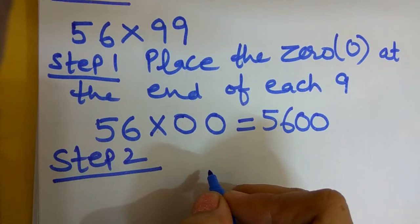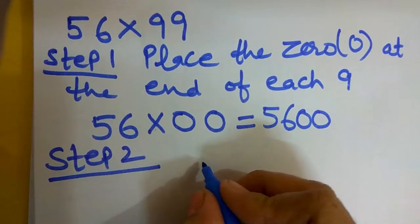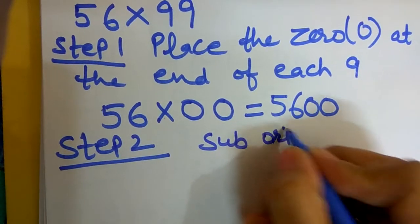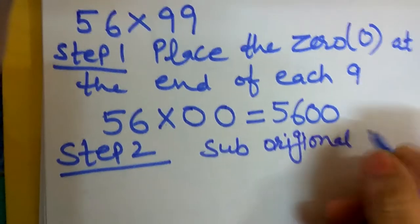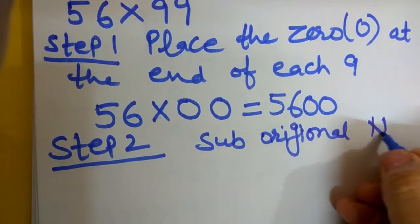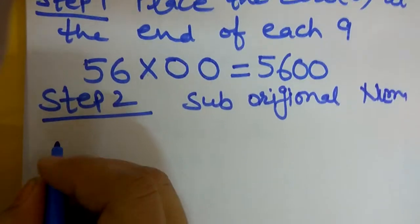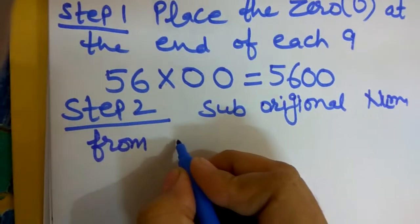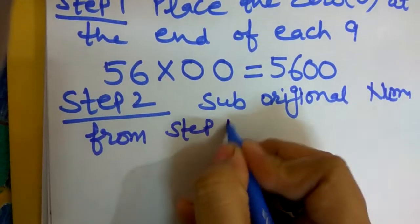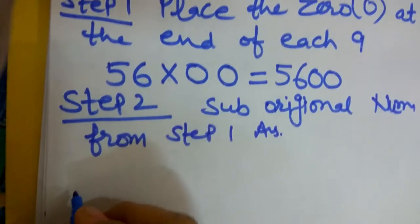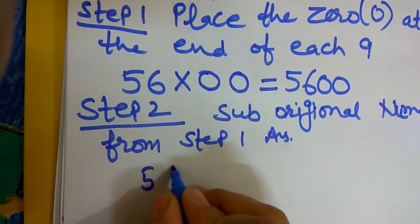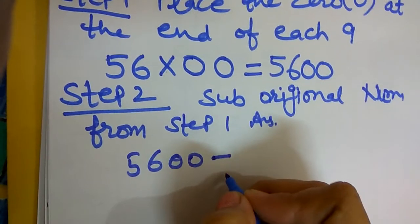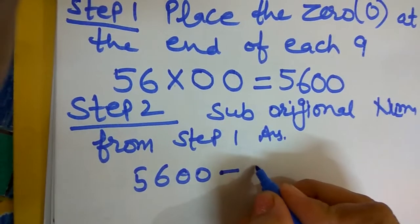Subtract original number from the step one. Step one answer is equal to 5600 minus the original number. 5600 minus 56.